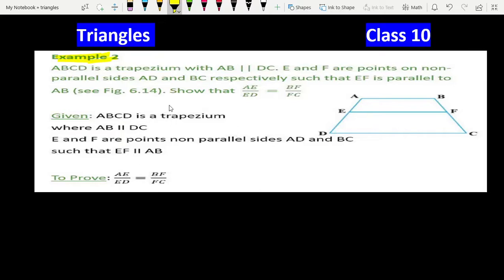Today's question example 2, NCERT. Let's start the question. ABCD is a trapezium with AB parallel to CD. E and F are points on two non-parallel sides AD and BC respectively such that EF parallel to AB.